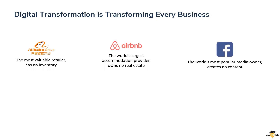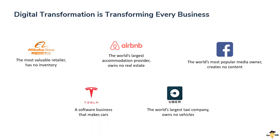Facebook, LinkedIn, Twitter, and Instagram are the world's most popular media owners, but they don't create any content. Tesla is not really a car company — it's basically software running on four wheels. Uber and Ola are the world's largest taxi companies, but they don't own any vehicles. What is their secret? Their secret recipe is software. They are using software to invent new products, new services, and new business models consistently, with improved efficiency and performance.